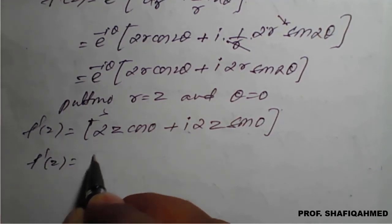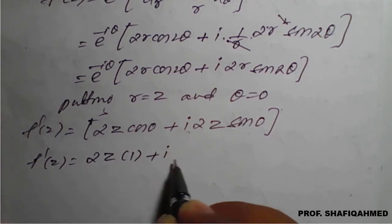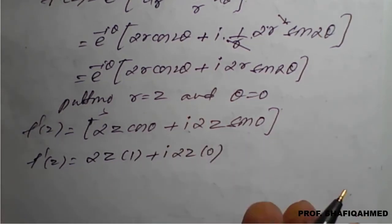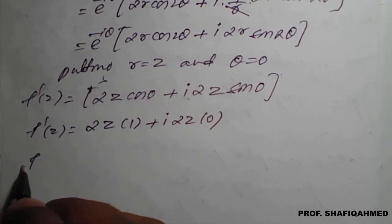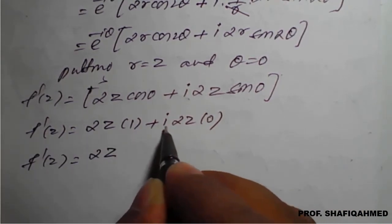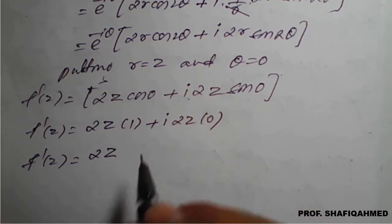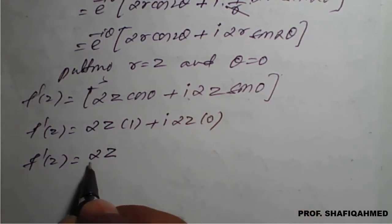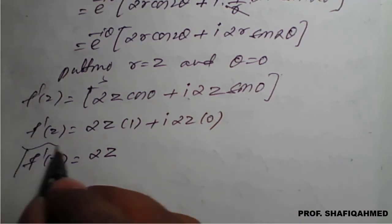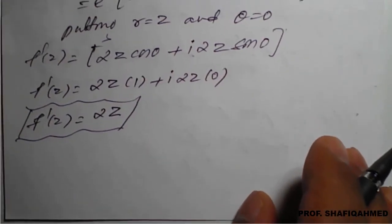On simplification: f'(z) = 2z · cos(0) + i·2z · sin(0) = 2z · 1 + i·2z · 0 = 2z. So f'(z) = 2z. But we want f(z), so we need to integrate both sides.